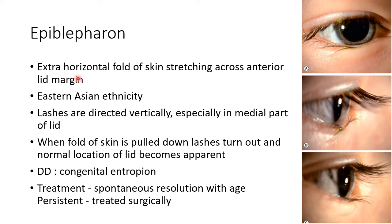Now let us discuss about epiblepharon. In epiblepharon, there is an extra horizontal fold of skin stretching across the anterior lid margin. This picture shows epiblepharon. It is common in people of East Asian ethnicity. The lashes are directed vertically, especially in the medial part of the lid. When the fold of skin is pulled down, the lashes turn out and the normal location of the lid becomes apparent. This picture shows the normal position of the lid in a case of epiblepharon after manual correction.